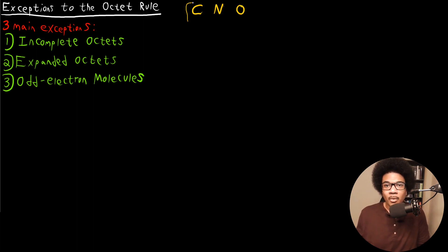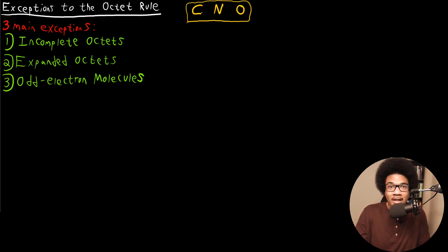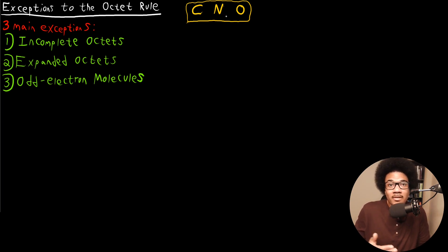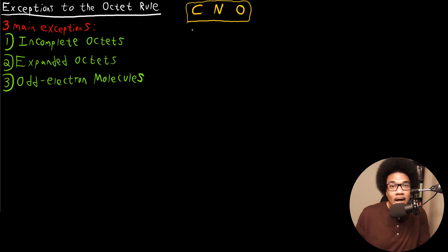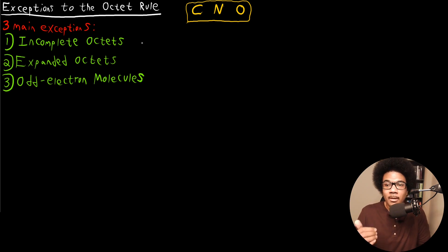It's very important that these three follow the octet rule. These three atoms form the basis for a lot of organic molecules and many important molecules for biological and technological applications. That's the main reason why we teach it — it provides a framework for understanding the structure of many important molecules. However, these atoms are not representative of the entire periodic table, and there are going to be some exceptions. These exceptions fall into one of three main categories.